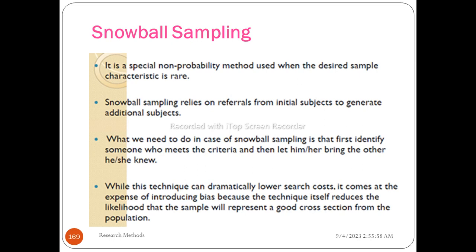The snowball sampling is released on referral from initial subjects to generate additional subjects. What we need to do in case of snowball sampling is: first, identify someone who meets the criteria, and then let him or her bring in others they know. While this technique can dramatically lower search costs, it comes at the expense of introducing bias.